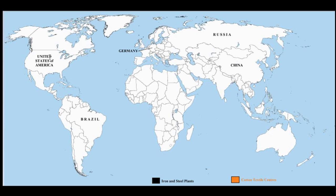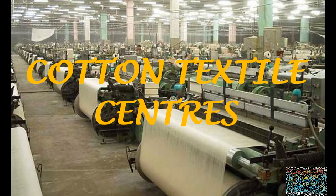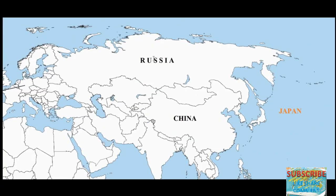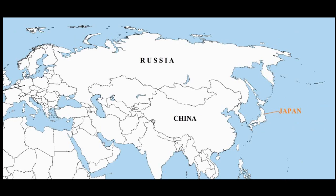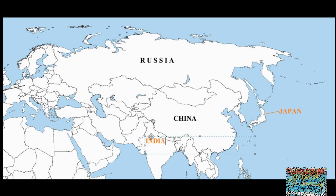So for iron and steel plants we have: China, Russia, Germany, United States of America, and Brazil. Now moving to cotton textile centers — Japan, which is east of China and south-east of Russia, and India, our country.